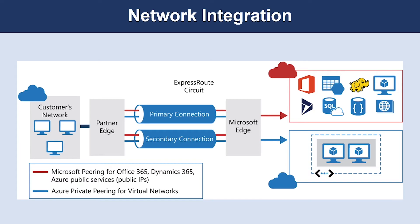To provide a dedicated private connection between your network and Azure, you can use ExpressRoute. ExpressRoute lets you extend your on-premises network into the Microsoft Cloud over a private connection facilitated by a connectivity provider. With ExpressRoute, you can establish connections to Microsoft Cloud services such as Microsoft Azure, Office 365, and Dynamics 365. This improves the security of your on-premises communication by sending this traffic over the private circuit instead of over the internet.